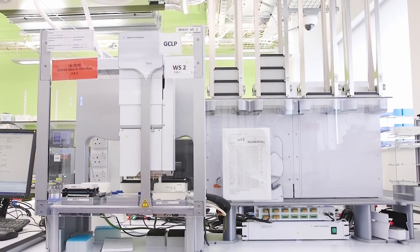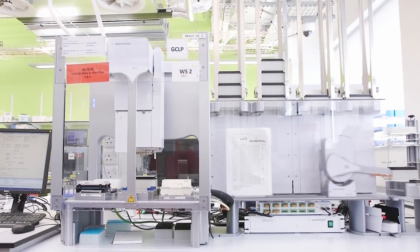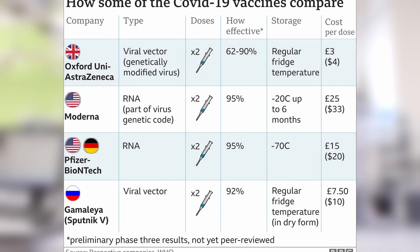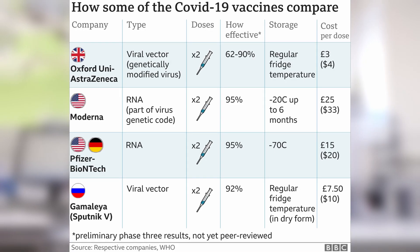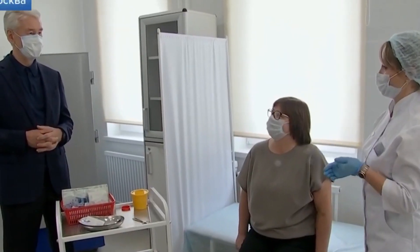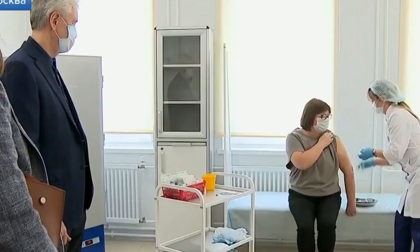However, it is worth remembering that the big advantage of Sputnik V is that it comes in two different forms, and the freeze-dried form of Sputnik V has the potential to save millions of lives in poor countries, where Pfizer and Moderna vaccines are impossible to use because they require really low temperatures. Would you be willing to take a risk to protect yourself from Covid? The Russian government has decided that it is ready.